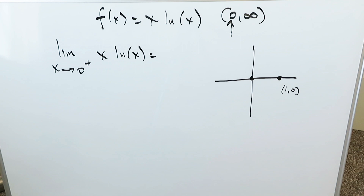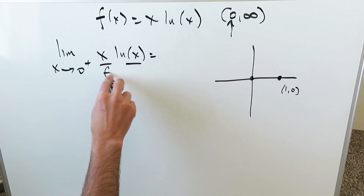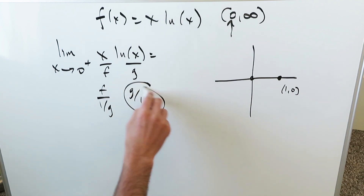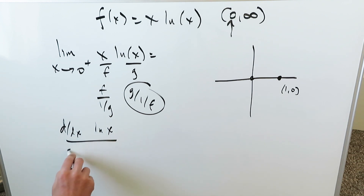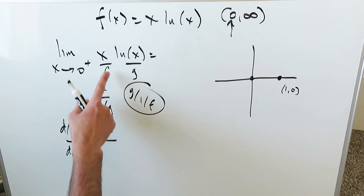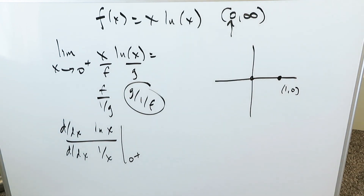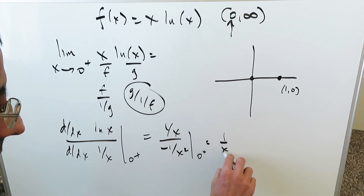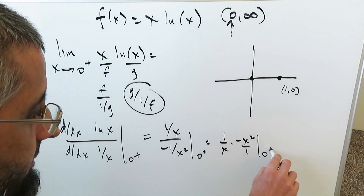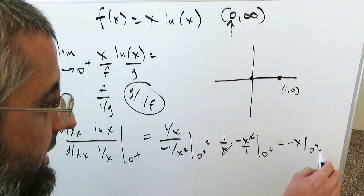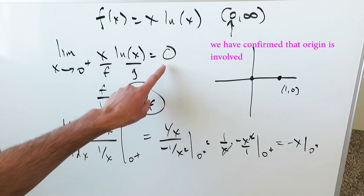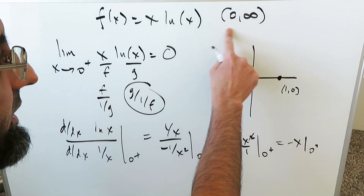We deal with the indeterminate product by converting it into a quotient form and applying L'Hôpital's rule. I rewrite it as natural log x divided by one over x. The derivative of natural log x is one over x; the derivative of one over x is minus one over x squared. Simplifying gives minus x, and evaluating at zero from the right gives zero. So the limit of x natural log x as x approaches zero from the right equals zero.